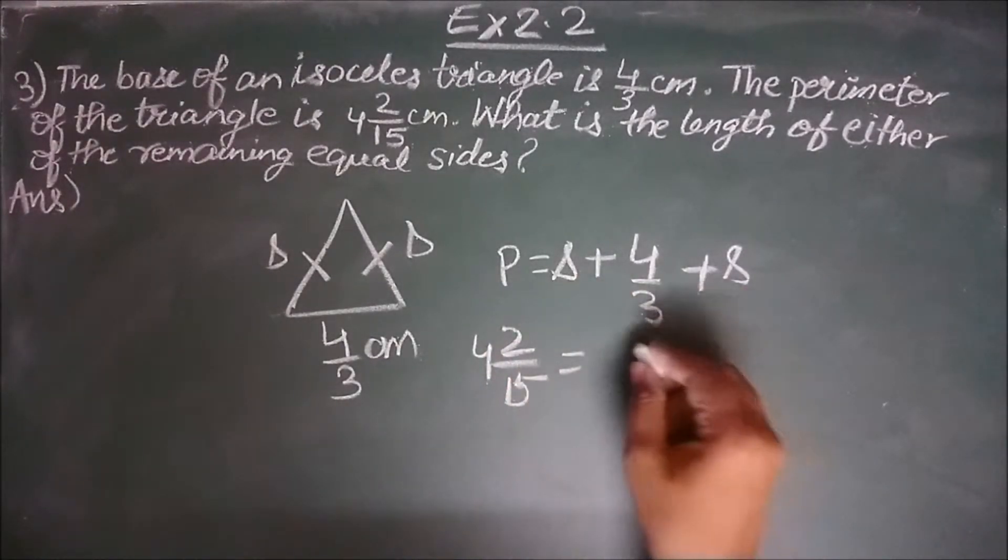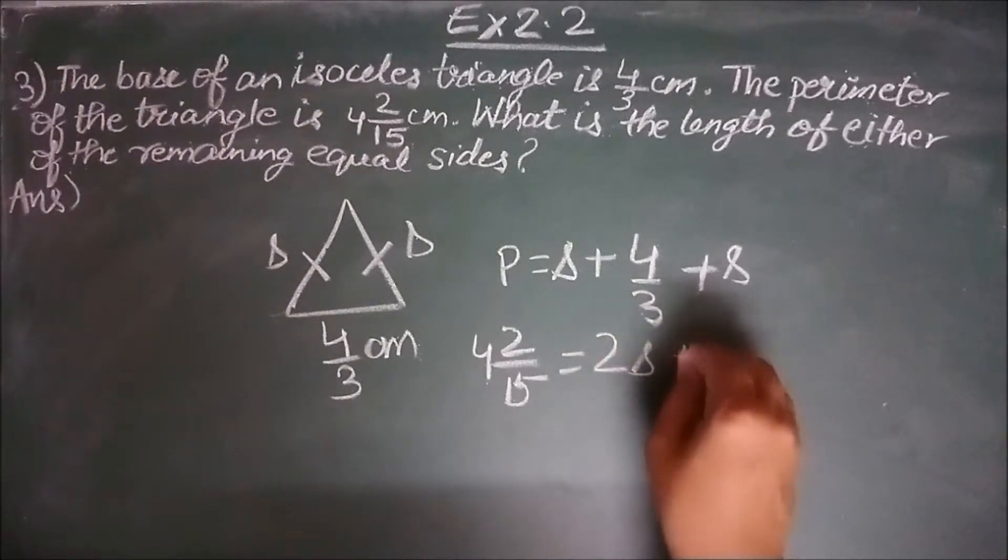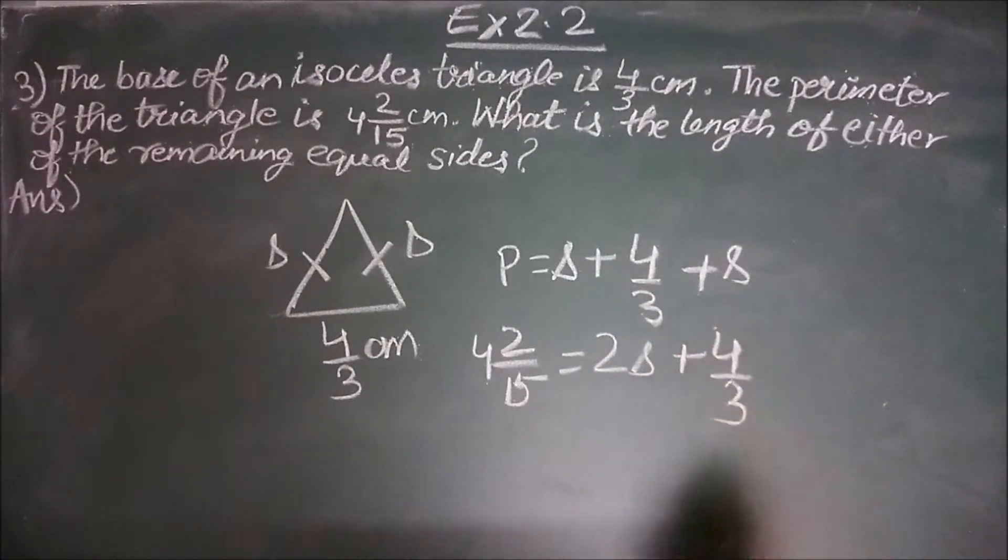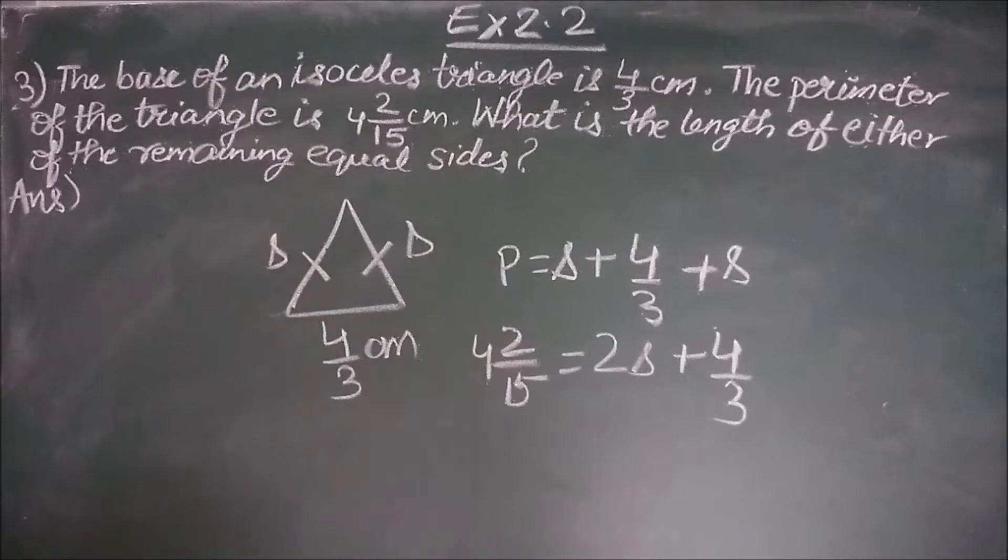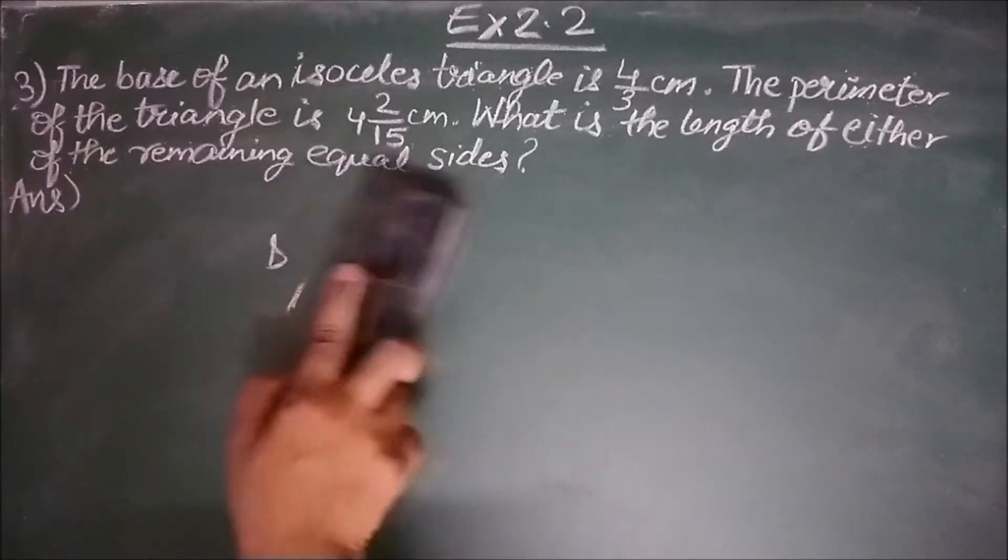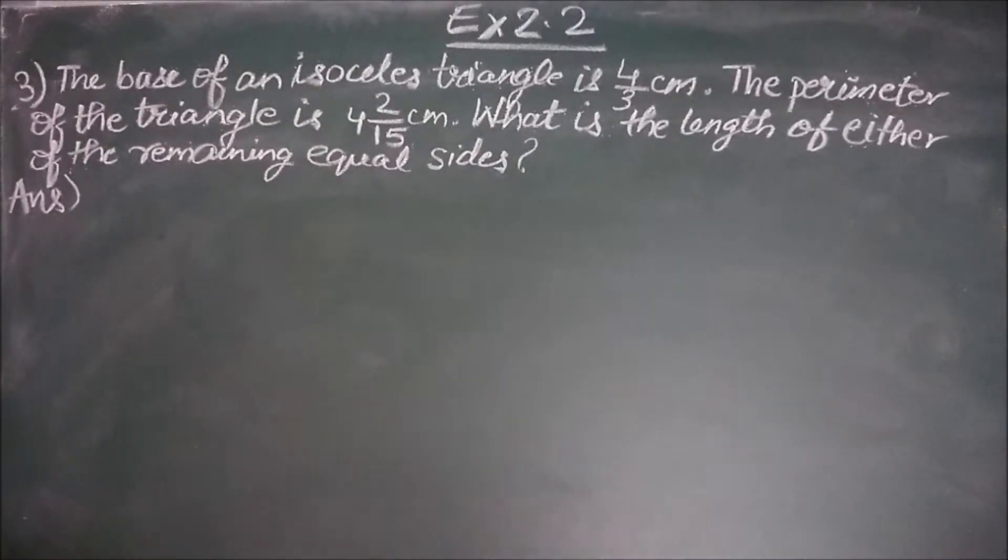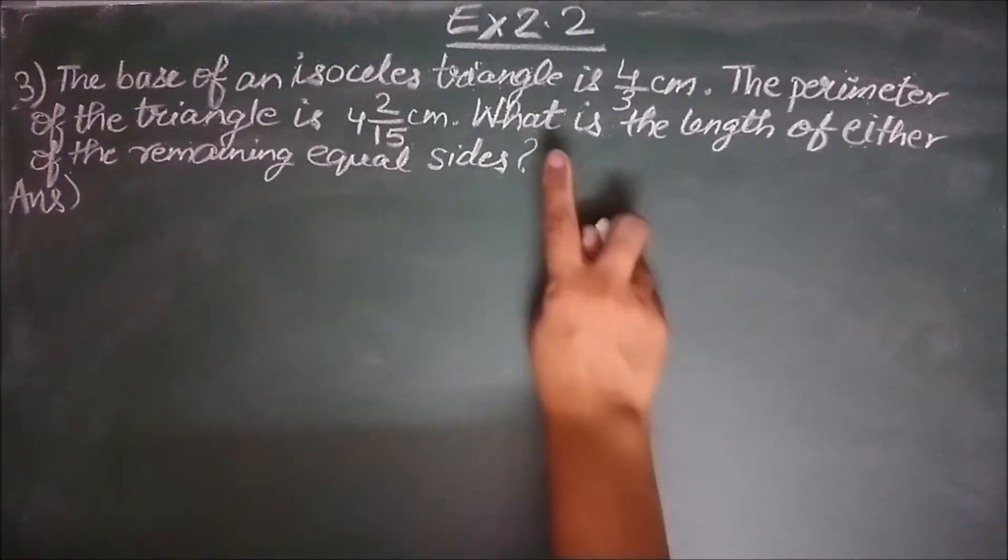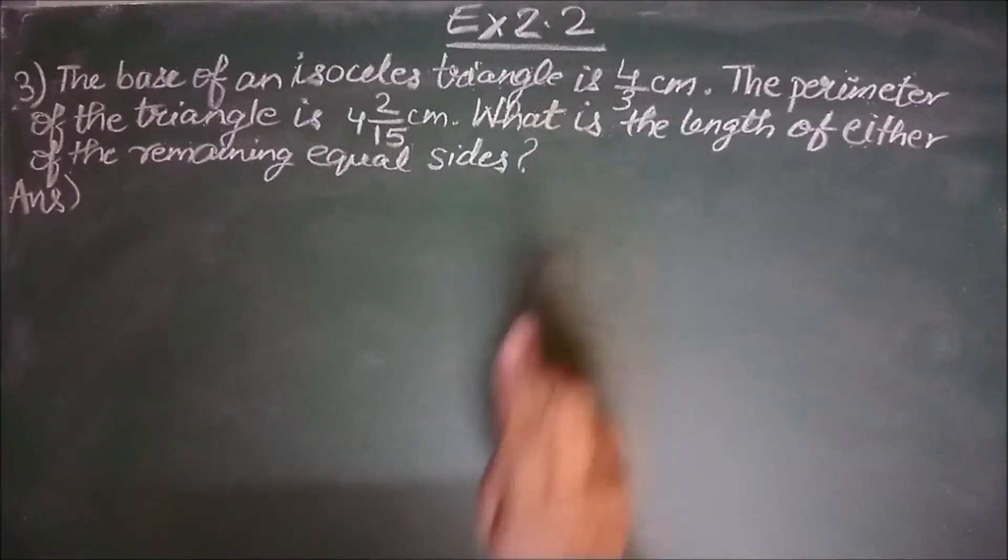So we have S plus S, that is 2S plus 4 by 3. This is our linear equation in one variable. Let us see how to write it.